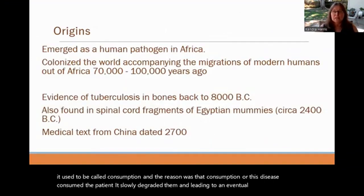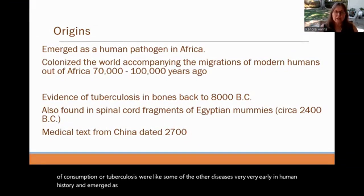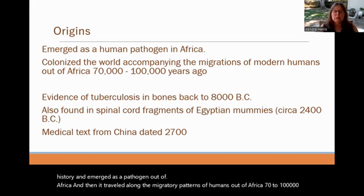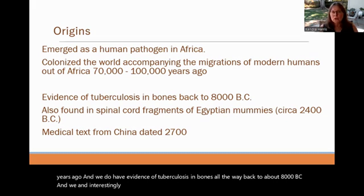The origins of consumption or tuberculosis were very early in human history, emerging as a pathogen out of Africa and traveling along the migratory patterns of humans 70 to 100,000 years ago. We have evidence of tuberculosis in bones all the way back to about 8,000 BC, and it was found in spinal cord fragments. Egyptian mummies dating to about 2,400 years ago also show evidence of it.